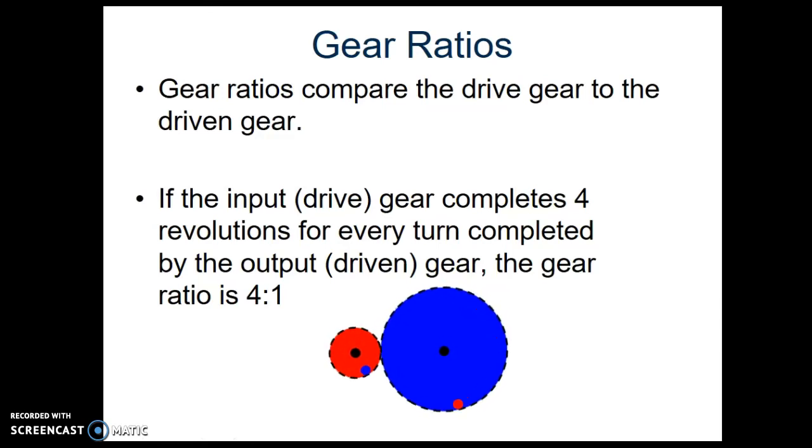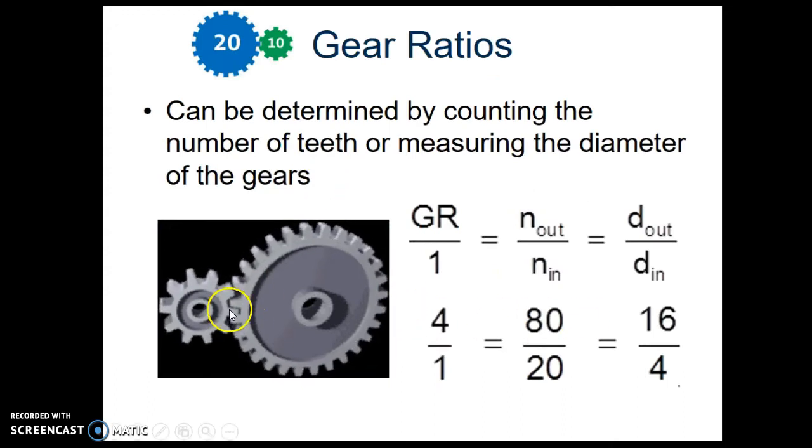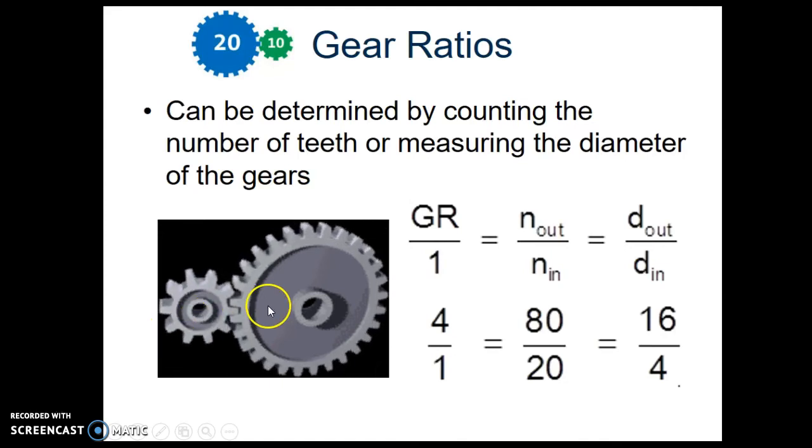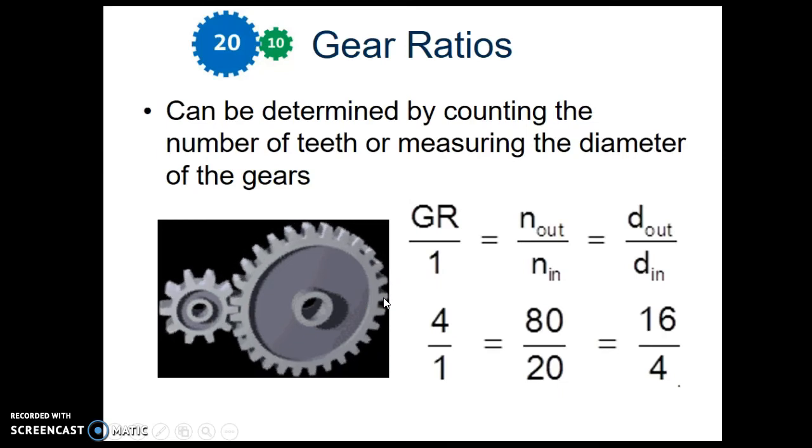It can be pretty time consuming counting gears spinning though, so we have other ways to measure gear ratios as well. I'm not going to have you calculate these, but just know that we can also calculate gear ratios by counting the number of teeth on each gear or by taking a ruler and calculating the diameter across each gear. And then a ratio of those would be determined and that would be our gear ratio.